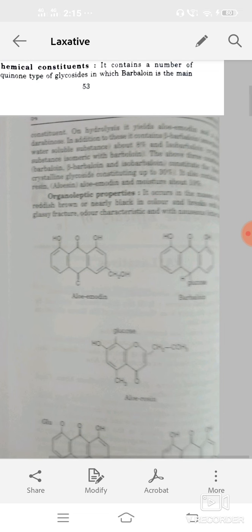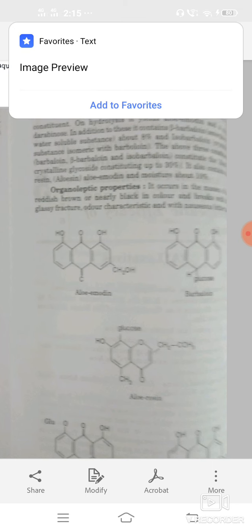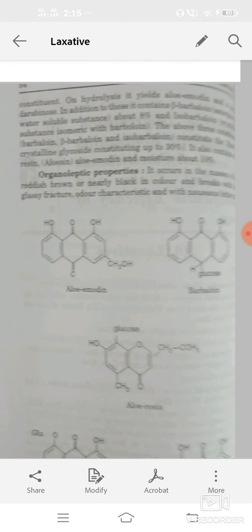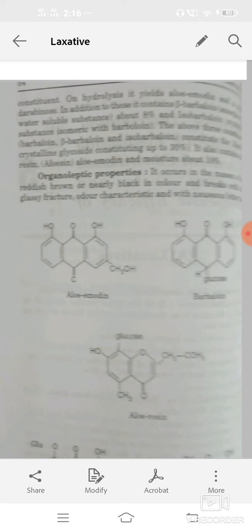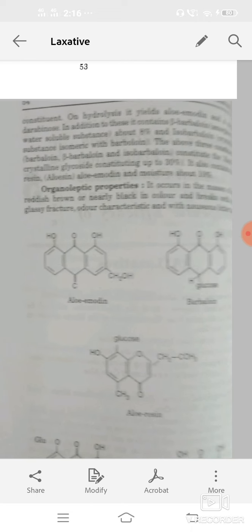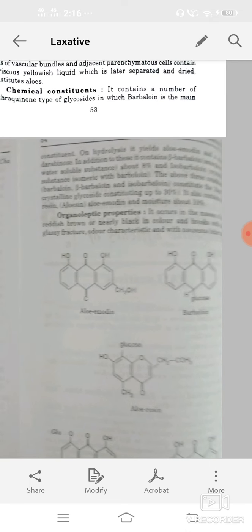Organoleptic properties: it occurs in the masses of dark reddish-brown in color, breaks with clear glass fractures, odor is characteristic, or bitter taste. Structures are aloe emodins, barbaloin, aloe resins, aloe emodins, 8 glycosides or chrysophenol.